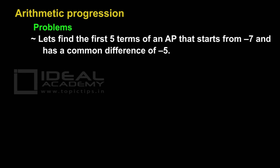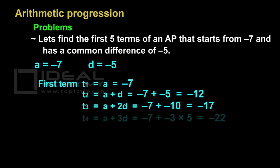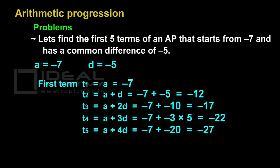Let's find the first five terms of an AP that starts from minus 7 and has a common difference of minus 5. According to the question, first term a is equal to minus 7 and common difference d is equal to minus 5. First term t1 is minus 7. t2 is a plus d, which is equal to minus 7 plus minus 5, which is equal to minus 12. t3 is a plus 2d, which is equal to minus 7 minus 10, which is equal to minus 17. t4 is equal to a plus 3d, which is equal to minus 22. t5 is equal to a plus 4d, which is equal to minus 7 minus 20, which is equal to minus 27.